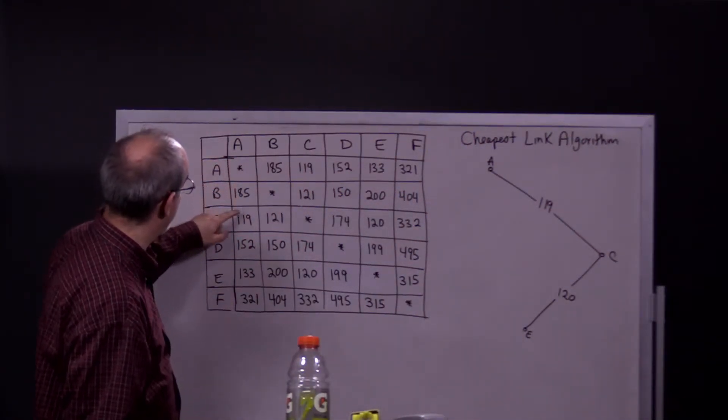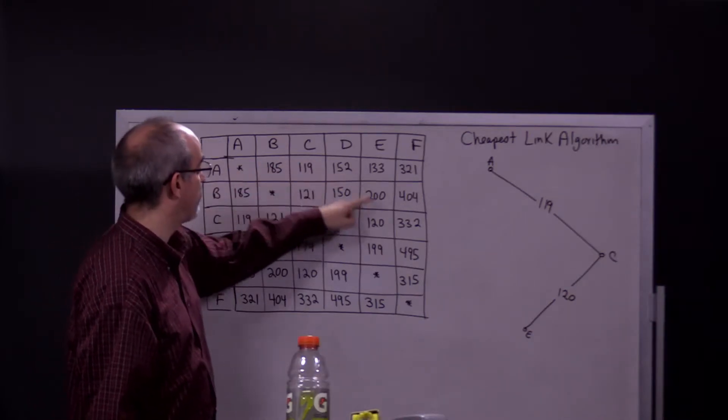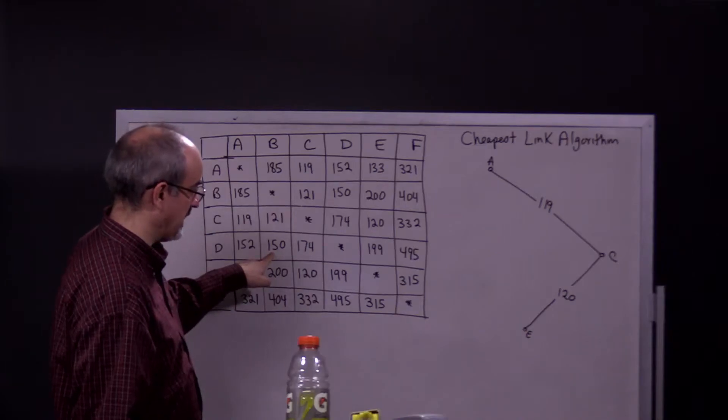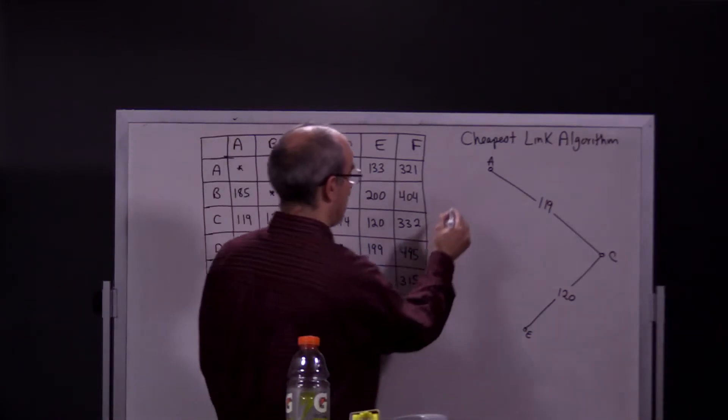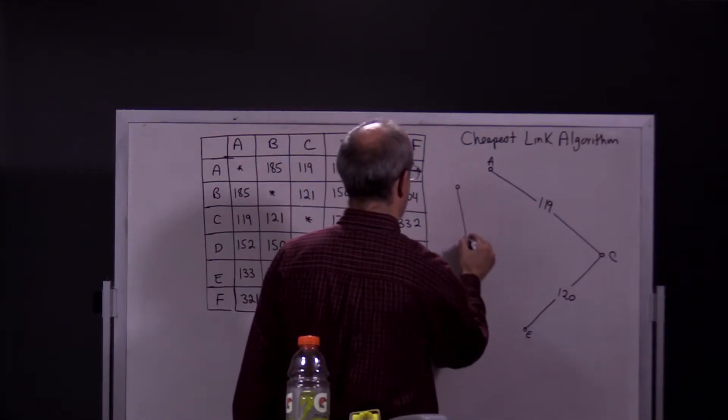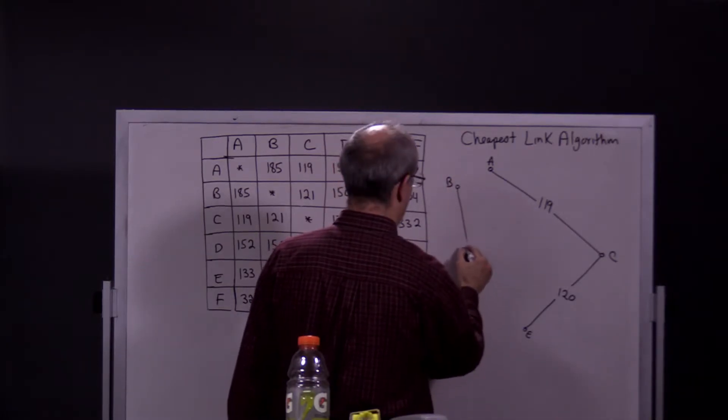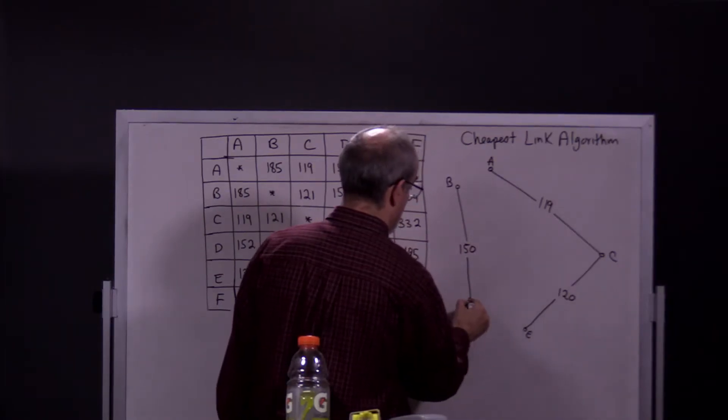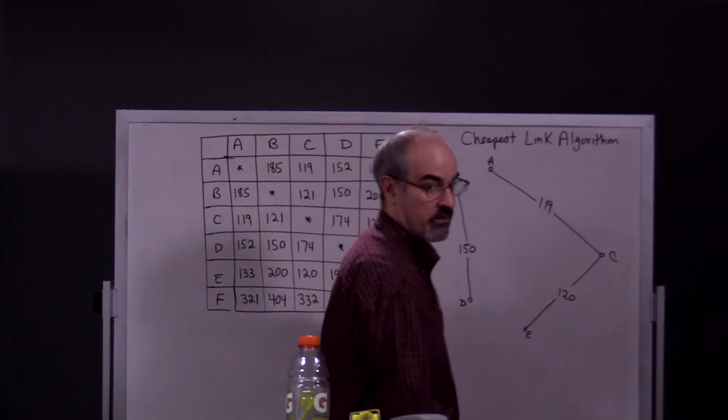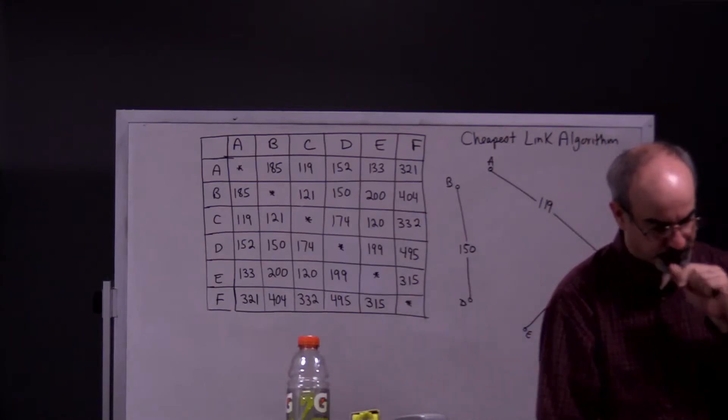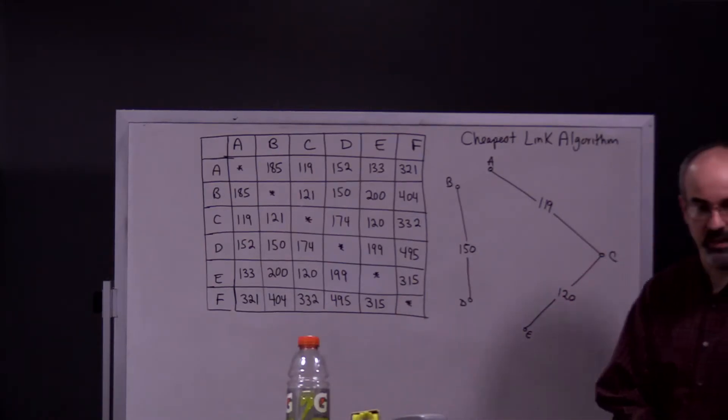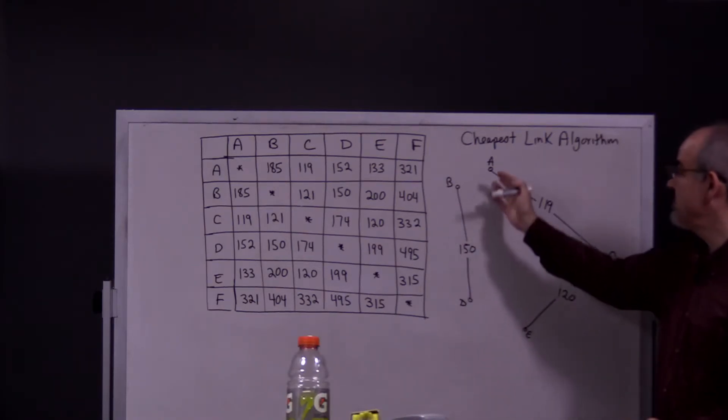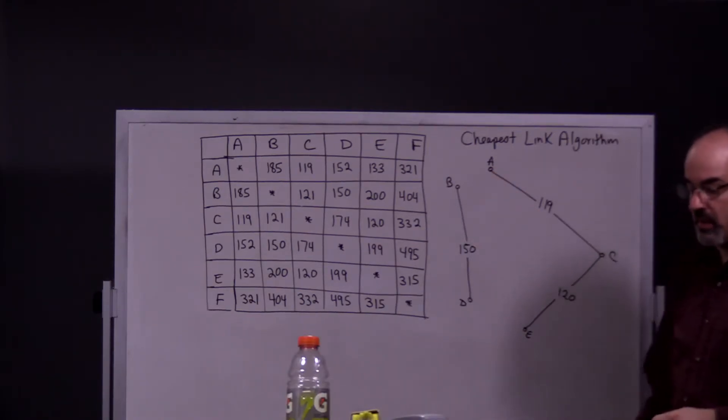So we have to look at the next highest one. There's a 150 which is D to B. You're allowed to use that. That doesn't violate any of our conditions. Notice that it doesn't have to all be together until the very end. Like there's nothing connecting these right now but there doesn't have to be until the very end.